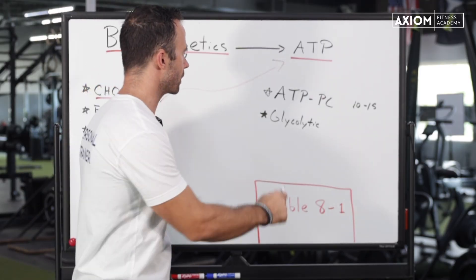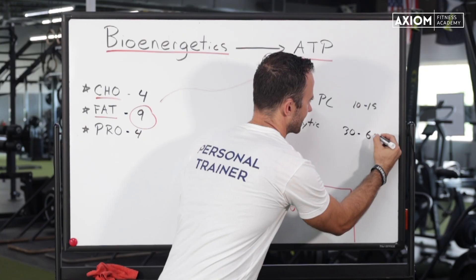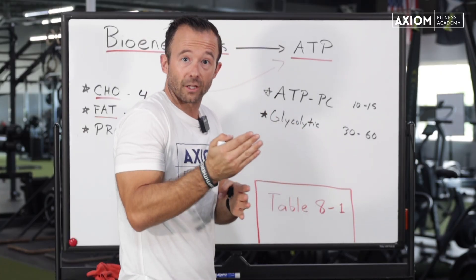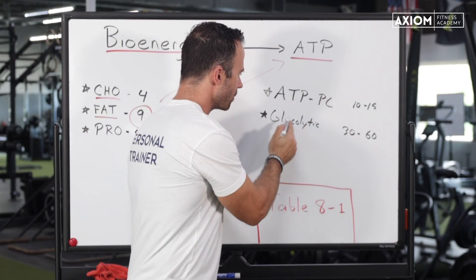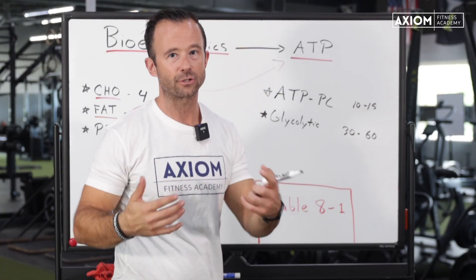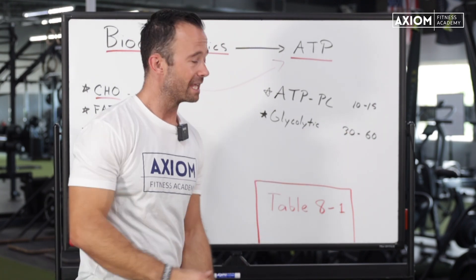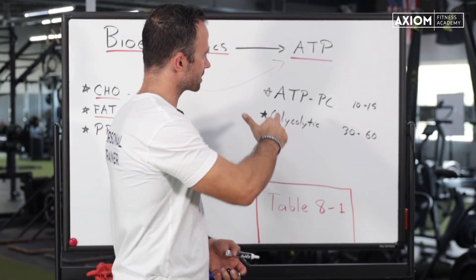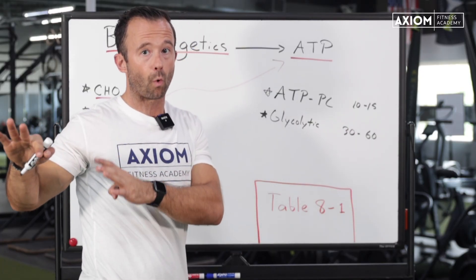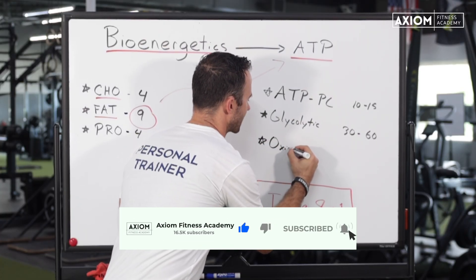The glycolytic system fuels roughly 30 to 60 seconds of activity. If you look at the material, it says 30 to 60 seconds and you wonder what happens between 15 to 30 — they're kind of working together there. When we work anaerobically, we get byproducts like lactate, hydrogen ions, and lactic acid. But either way, we can get fuel pretty quickly. The second energy system is still somewhat limited — once we start to get to about two minutes of continuous activity, that's really where we kick into our third system, the oxidative.